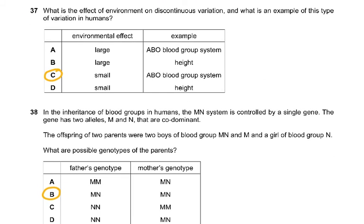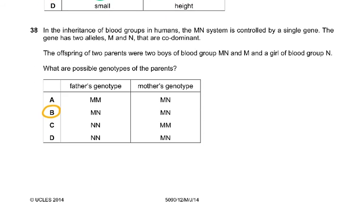Question 37: what is the effect of environment on discontinuous variation? Discontinuous variation means things like blood groups. What is the effect of environment on discontinuous variation, and what is an example in humans? Environmental effect is small, and the example is the ABO blood group system. That's the only possible answer that fits.